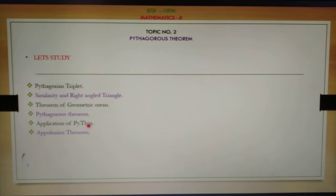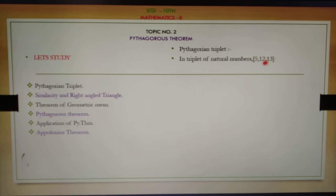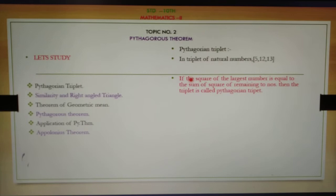First concept: Pythagorean triplet. A Pythagorean triplet means a triplet of natural numbers — that is, we take three natural numbers. The definition: if the square of the largest number is equal to the sum of the squares of the remaining two numbers, then the triplet is called a Pythagorean triplet.